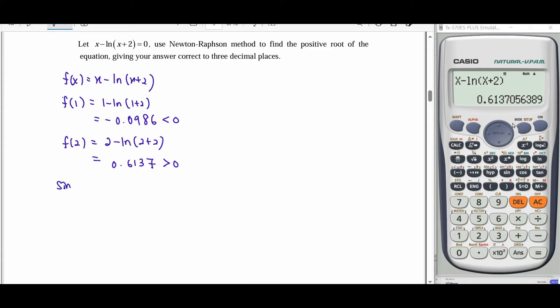So we can see since f(1) is negative and f(2) is positive, they're having opposite signs. Therefore, this function f(x) has at least one real root, one positive root in between the value of 1 and 2. Then we can find out what is our root.